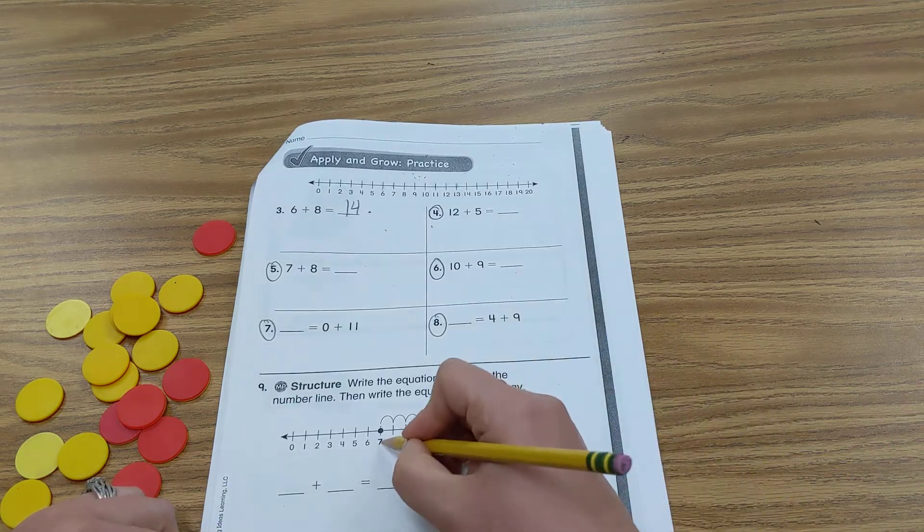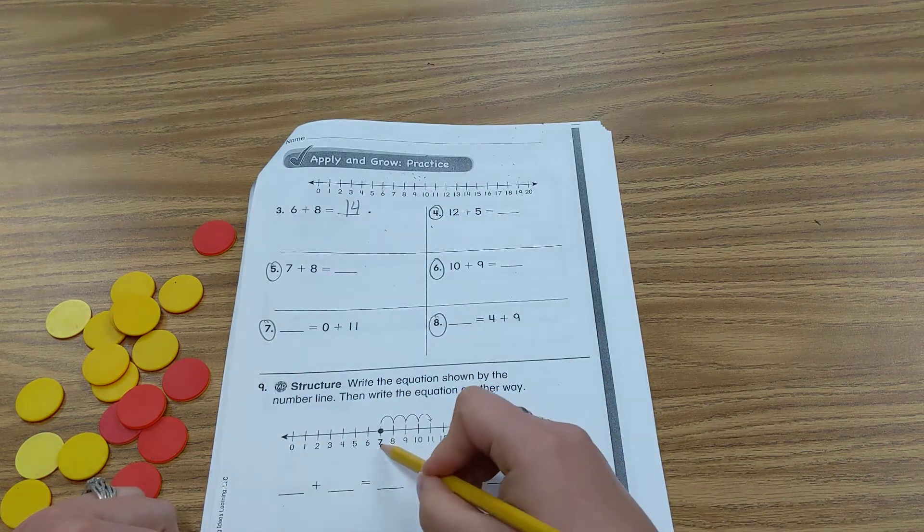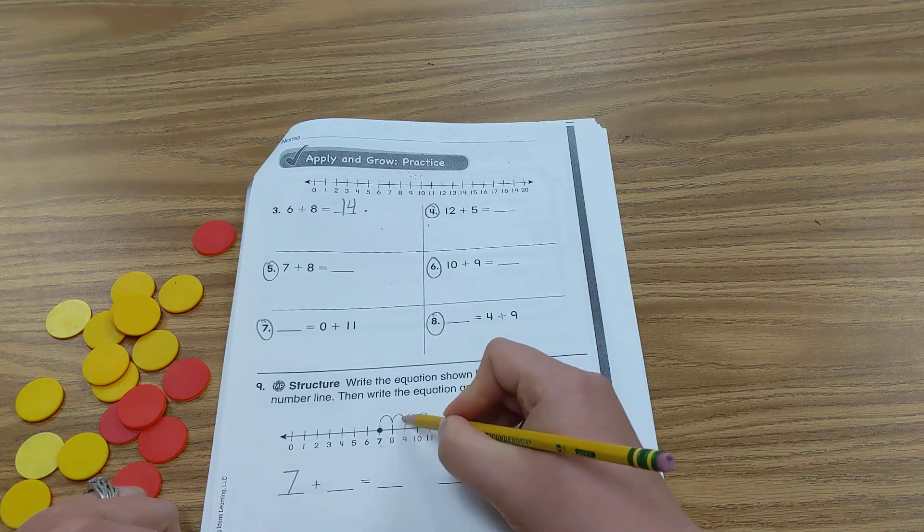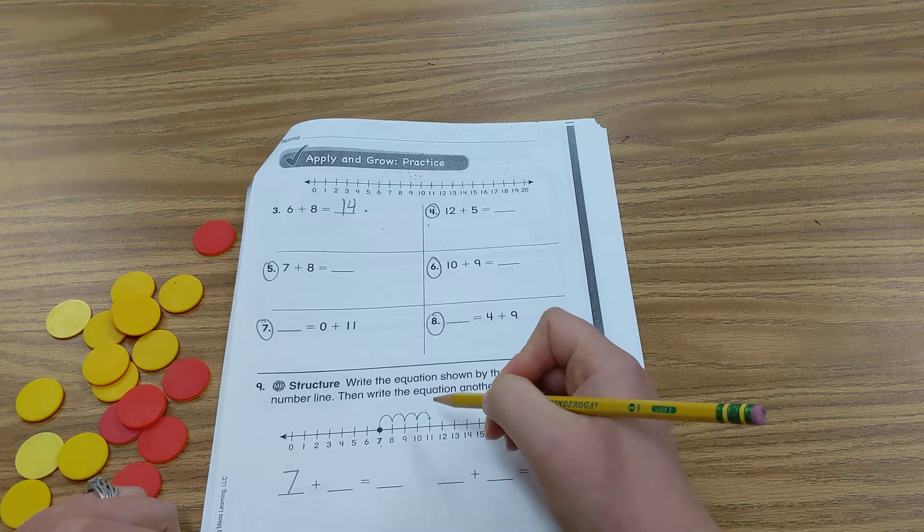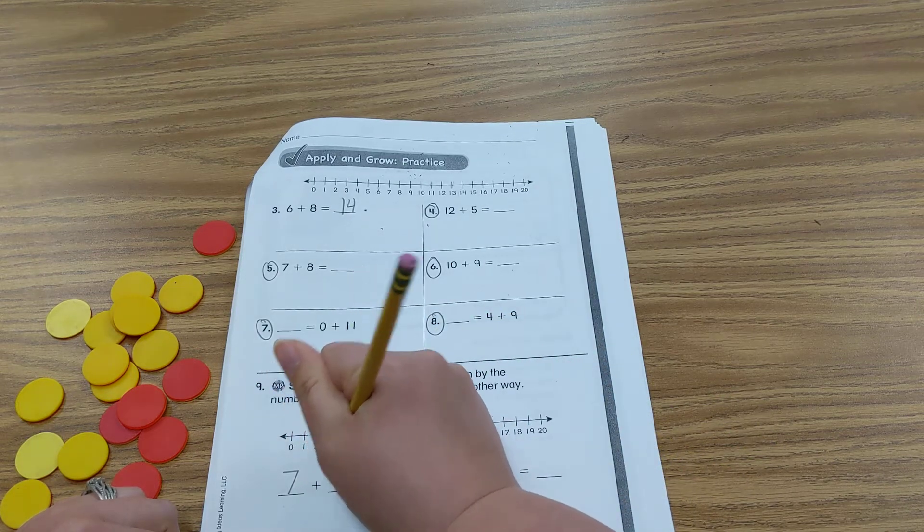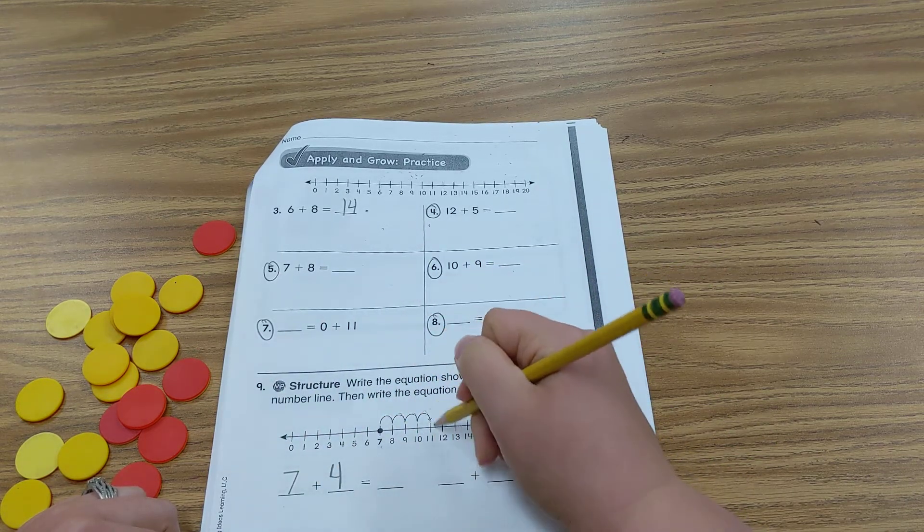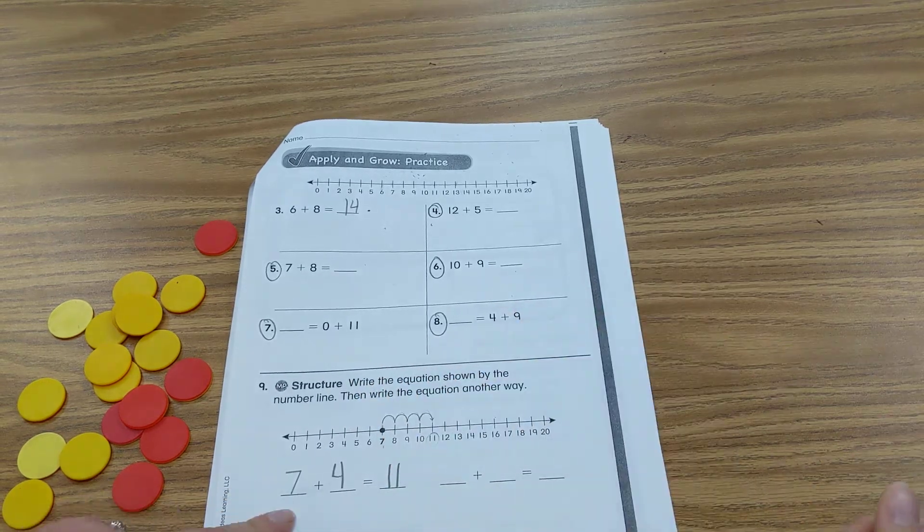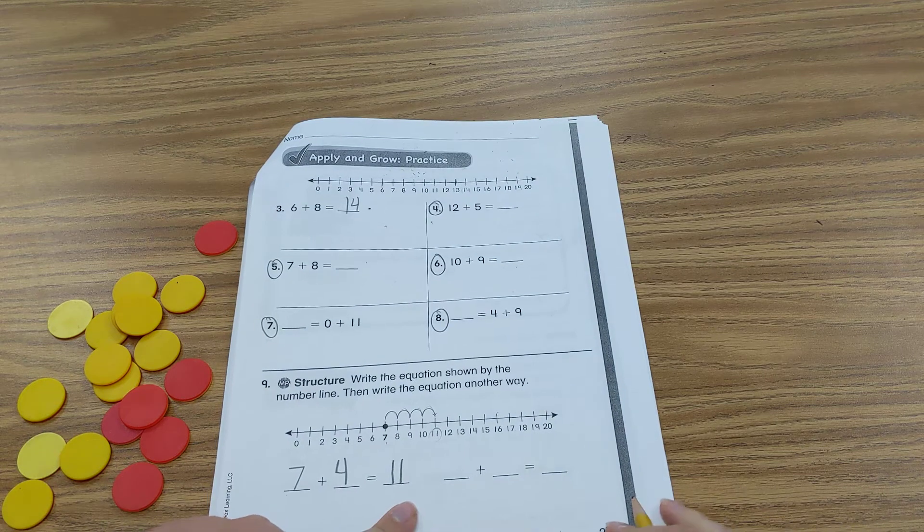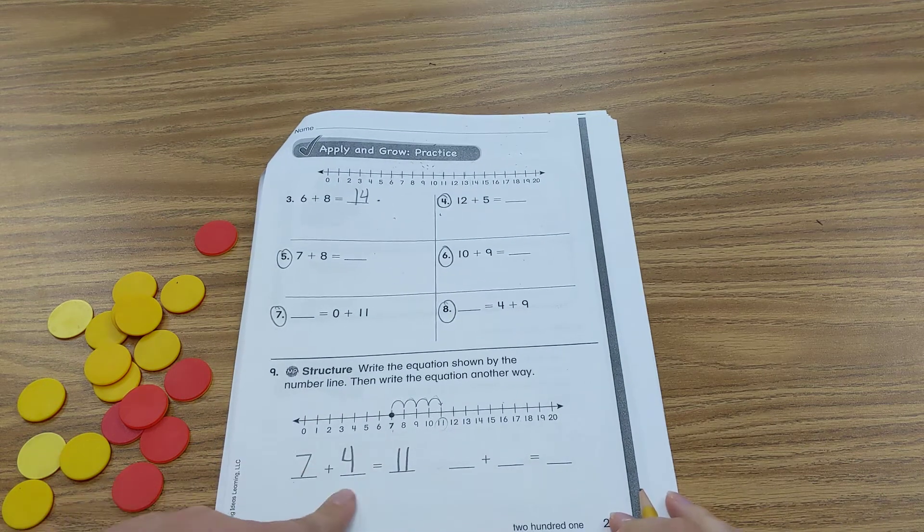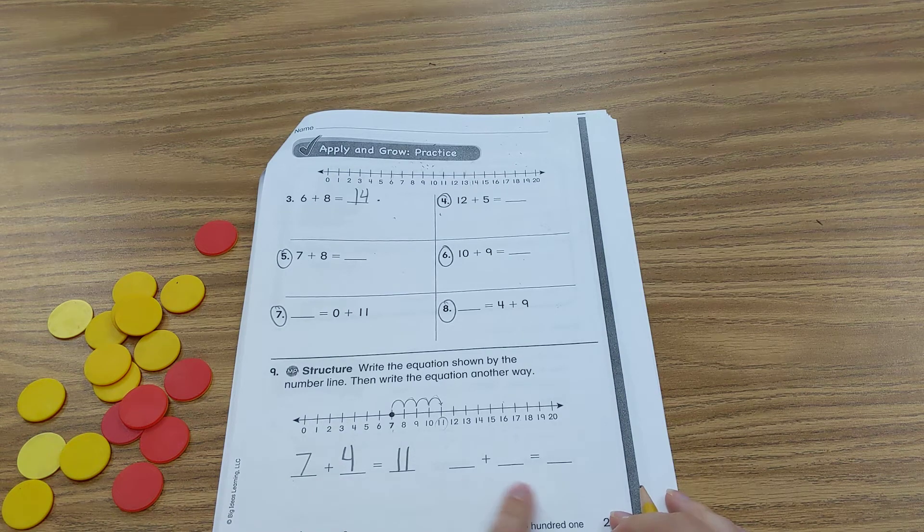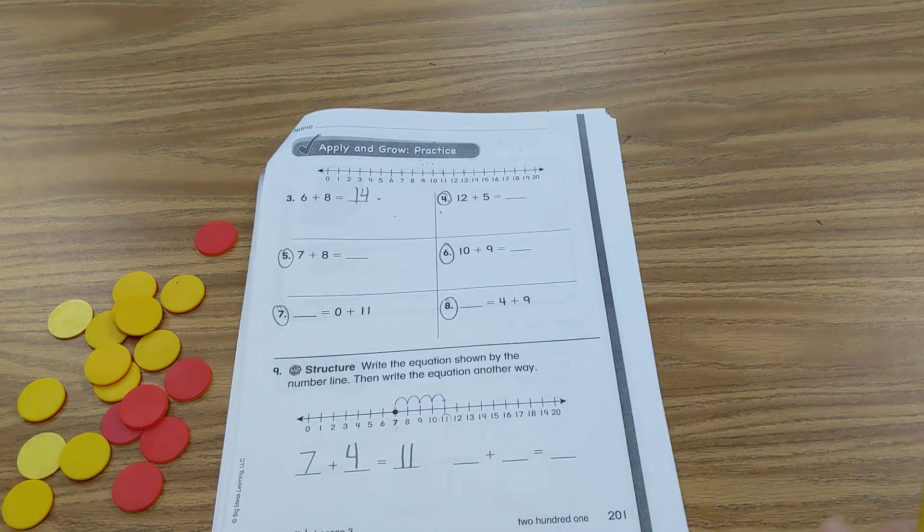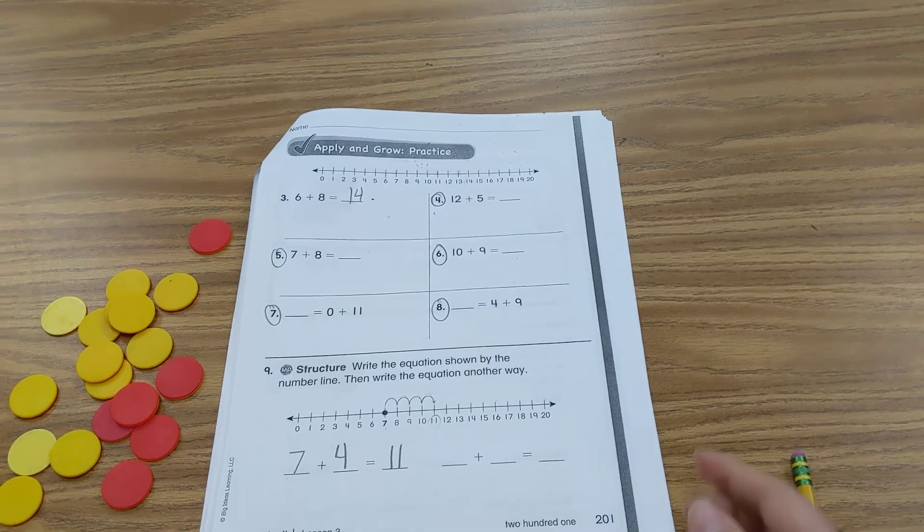So we have 7. 7 is one part. And 1, 2, 3, 4. Plus 4. So we jumped 4 times. And that equals 11. Addend, addend, whole. Or addend, addend, sum. And you're going to switch your addends and have the same sum. So you can do that part of number 9.